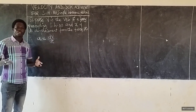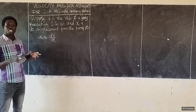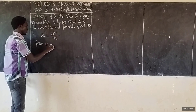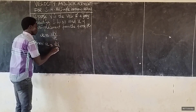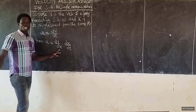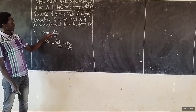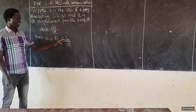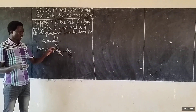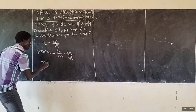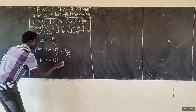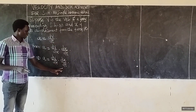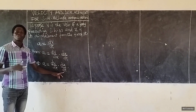I want to bring in or combine acceleration, velocity, and displacement all together. I am going to use the chain rule. So, from A = dV/dT, we can write A = dV/dX times dX/dT. When I do this, I will still have acceleration on the left, but I have introduced displacement into our equation.